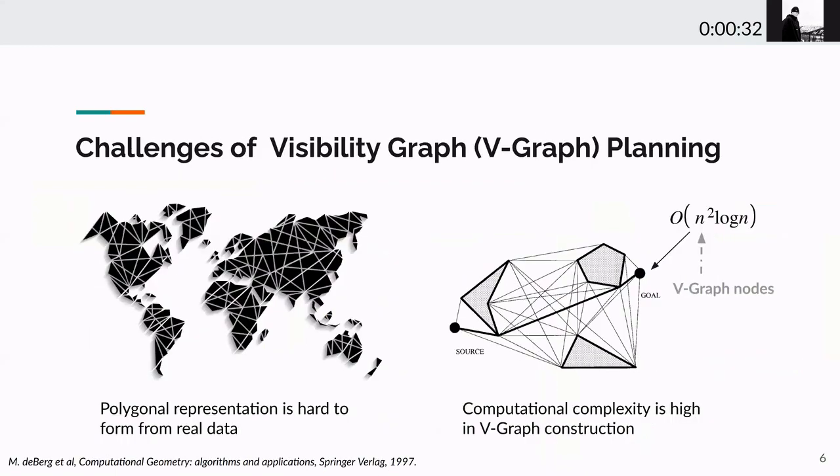But why is the visibility graph planner not particularly popular? It's due to two reasons. First, to model environment with obstacle polygons, but the obstacle polygons are not easy to obtain from real perception sensor data. Second, constructing visibility graph has high computational complexity at the magnitude of n square log n, where n is the number of nodes in the visibility graph. We know visibility graph has useful characteristics that we would like to explore. But to be able to use it, we have to resolve those difficulties.